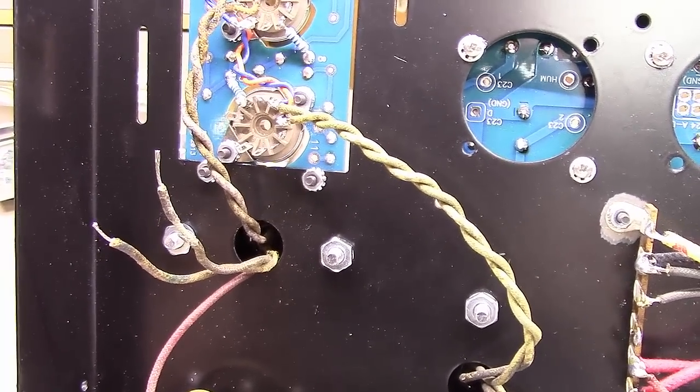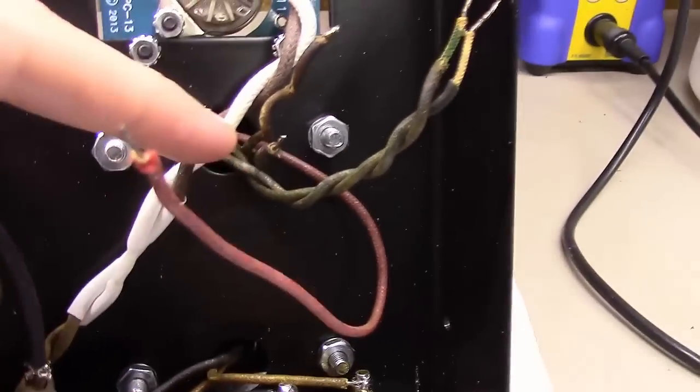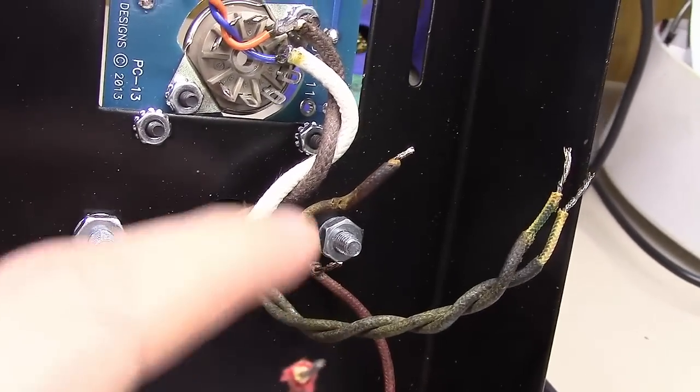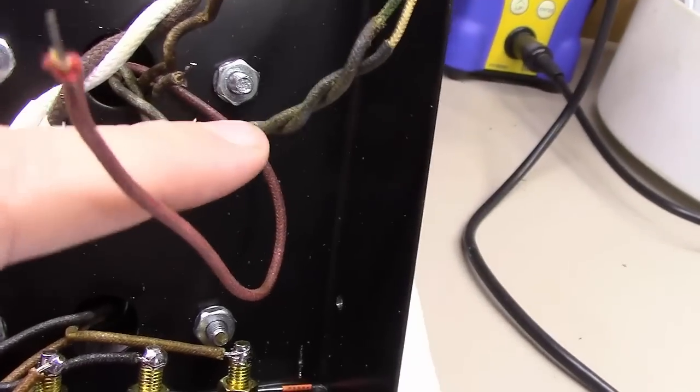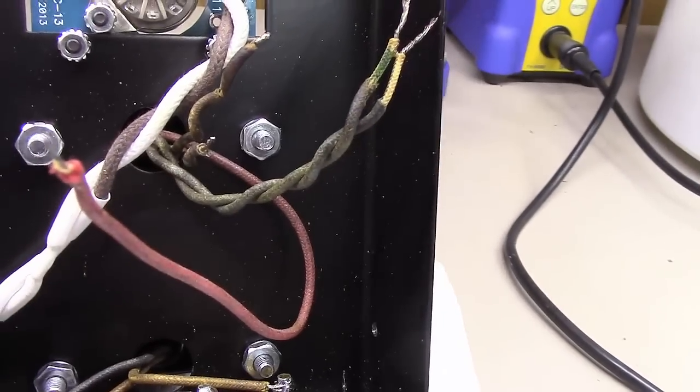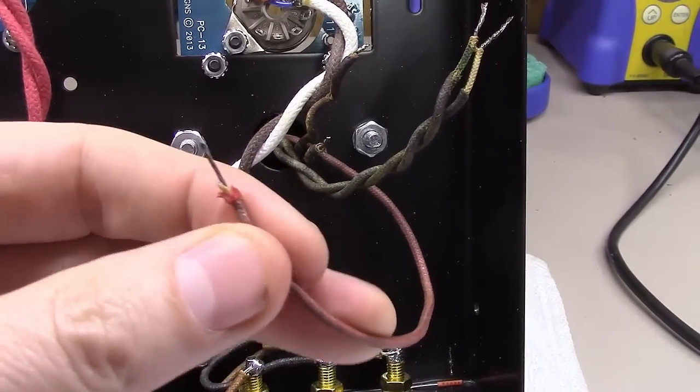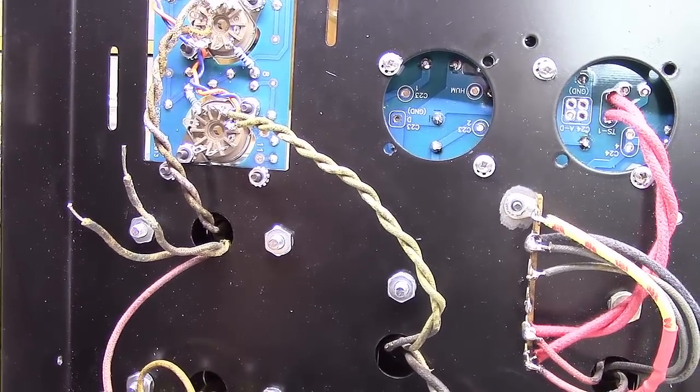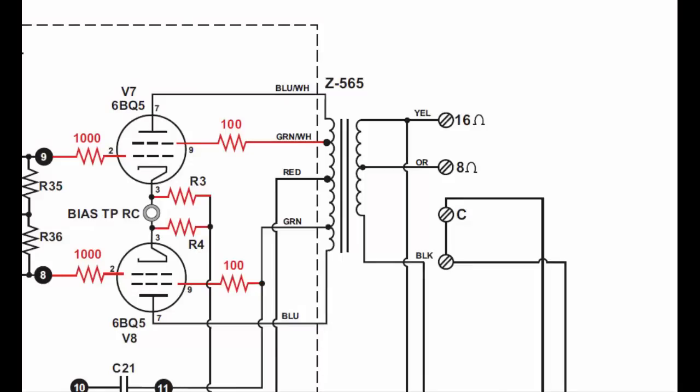Let's jump over to schematic and look at this thing a little bit. What we've got here is the schematic of the Z565 output transformer and this is a very traditional design push pull ultralinear output transformer. Could be used in a lot of different types of amplifiers, push pull amplifiers. But the theory I'm going to teach you today should apply to any output transformer, push pull, single ended or what not.